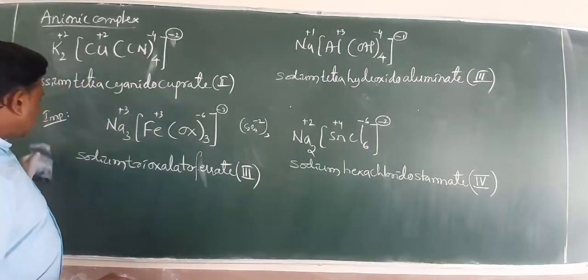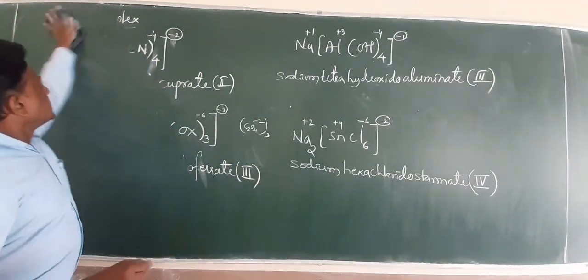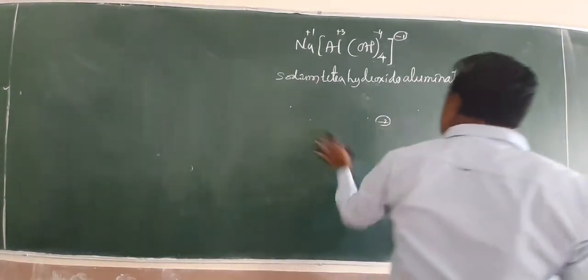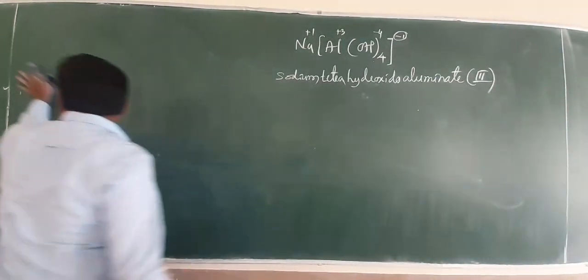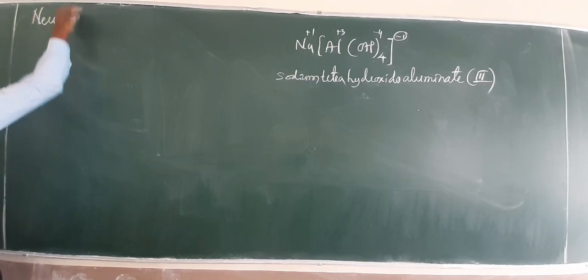Sodium tetra hydroxido aluminate 3 is the nomenclature of complex. These are the best examples for anionic complex as mentioned in our NCERT.